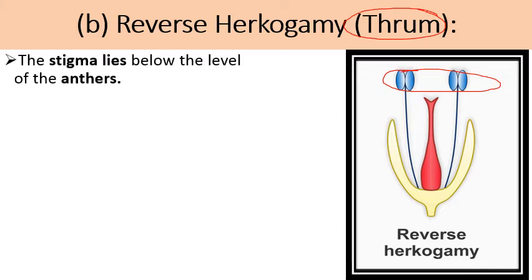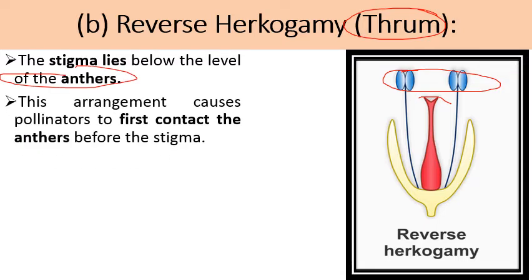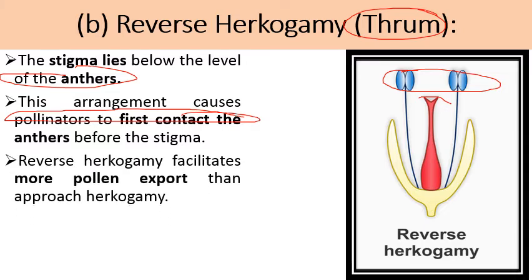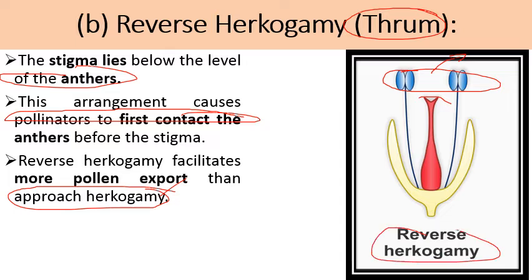The second type is reverse herkogamy, also known as thrum flower. Here the anthers are present above the stigmatic surface — the stigma lies below the level of the anthers. This arrangement causes the pollinator to first contact the anthers before the stigma. Reverse herkogamy facilitates more pollen export than approach herkogamy.